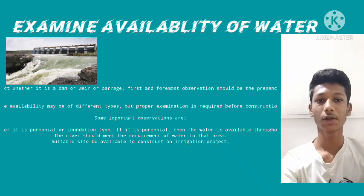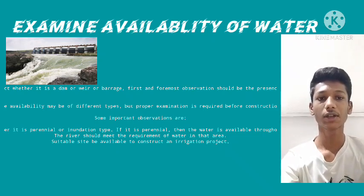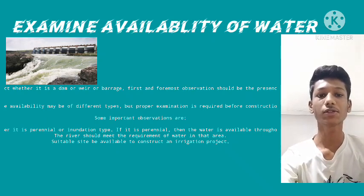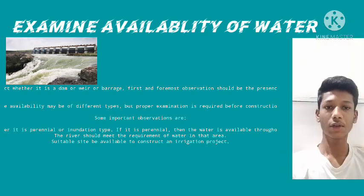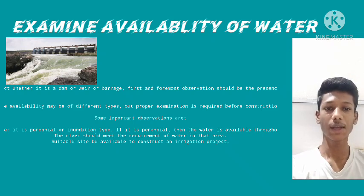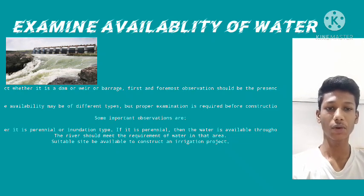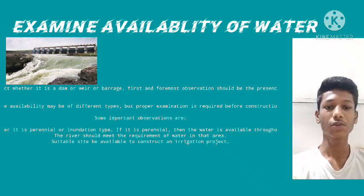Examine availability of water. To construct an irrigation project, whether it is a dam or weir, the first and foremost observation should be the presence of water and its availability. If there is any river flowing in that area, we should know the type of river — whether it is perennial or inundation type. If perennial, water is available throughout the year. If it is an inundation river, study its previous yearly discharges. The river should meet the water requirement of that area, and a suitable site should be available to construct the irrigation project.